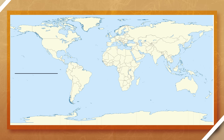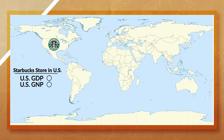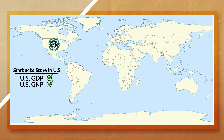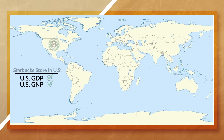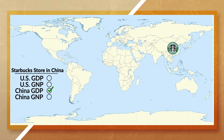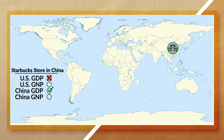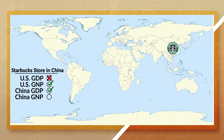Or take Starbucks, for example. When they open a new store inside the United States, it is part of the United States' GDP and its GNP, since Starbucks is an American company. But if Starbucks opens stores in China, those stores would be part of China's GDP and not the United States' GDP, since the production is occurring inside China's boundaries. But remember, Starbucks is still an American company, so it would be part of the United States' GNP, and not China's.